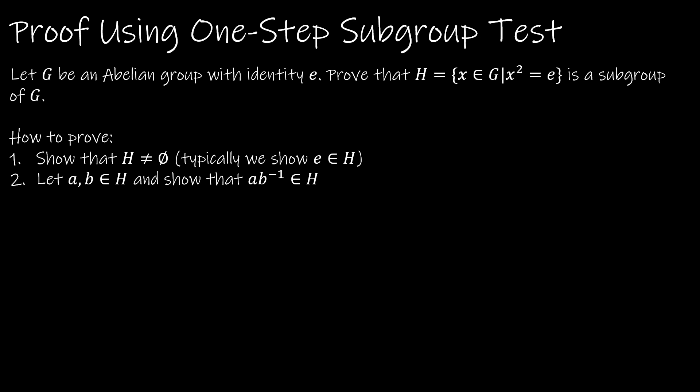What we're trying to prove: G is an abelian group — remember, abelian means a·b = b·a for all a, b in G, so it's a commutative group with identity e. Prove that H, defined as all x in G such that x² = e — essentially all elements of order 2, where performing the operation twice returns you to the identity — is a subgroup of G.